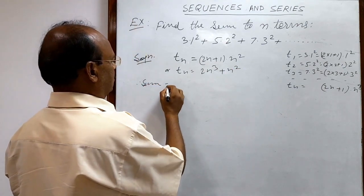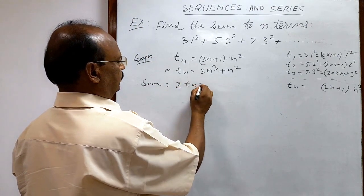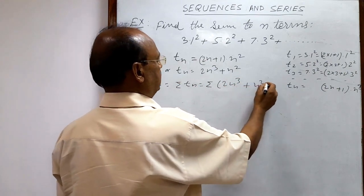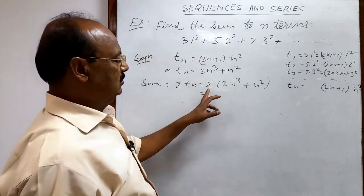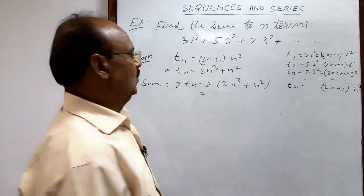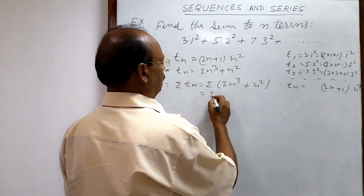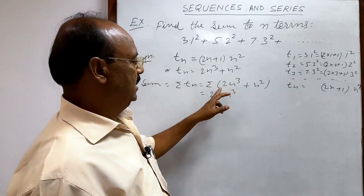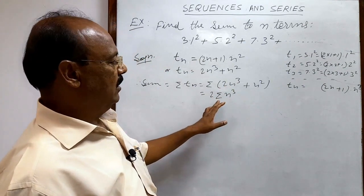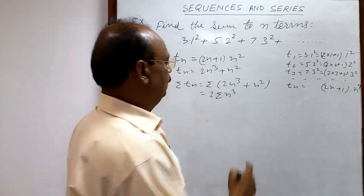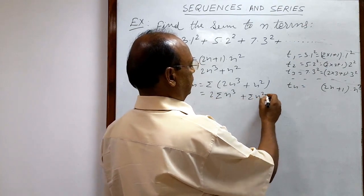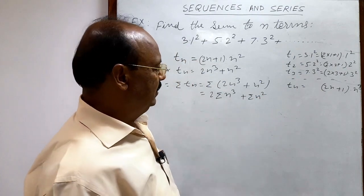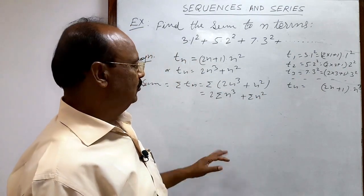Expanding Tn gives 2n cubed plus n square. The sum to n terms is sigma Tn, which equals sigma of 2n cubed plus n square. The sigma is distributed over both terms, giving 2 into sigma n cubed plus sigma n square, where the coefficient 2 is taken outside the sigma notation.